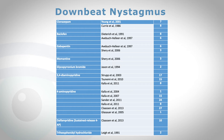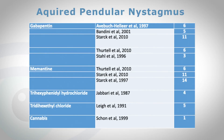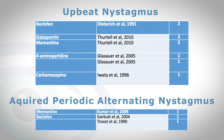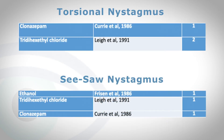Here we have a list of potential drugs that have been shown to have some effects on people with downbeat nystagmus. The left column is the drug name, the middle column is the study itself, and the right column is the number of patients used in those studies. A number of drugs have been tried for downbeat nystagmus, and there are also studies for pendular nystagmus. Other nystagmus types such as upbeat, periodic alternating, torsional, and seesaw have also been studied. Overall, the effect of drugs has not been overwhelming — some drugs work for some people but not others, and there doesn't seem to be a lot of science behind it.